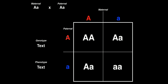The second cell gets big A from the dad and little a from the mom — so big A, little a, which is a heterozygote. In the third cell, we have big A from the maternal and little a from the paternal — also big A, little a, another heterozygote. In the fourth cell, we get little a from both the maternal and paternal — little a, little a. Since they're both the recessive allele, the lowercase letter is the recessive allele, so we call this homozygous recessive.